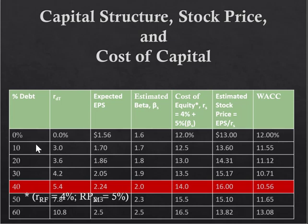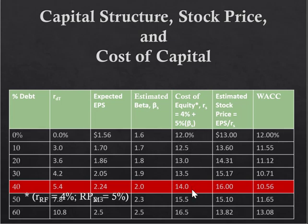Looking at each level of debt, you have a particular required rate of return on debt, an expected EPS, and an expected beta on the stock. The cost of equity is computed using the CAPM formula: 4% risk-free rate plus 5% market risk premium times beta. At 0% debt, the cost of equity is 12%, and it continues to rise as risk increases, driven by both financial leverage and operating leverage within the firm.